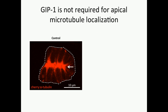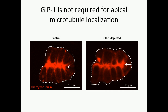We were interested then in looking at the microtubules directly. Here you can see a reminder of that apical localization at polarization with the microtubules heavily enriched at the apical membrane. Upon GIP1 depletion, we were very surprised to see that not only are the microtubules still abundant in these embryos, but the localization to the apical membrane is virtually indistinguishable from control embryos. This suggests that there are pathways completely independent of the gamma-TuSC that are allowing for apical polarization of microtubules and possibly nucleation and stabilization.